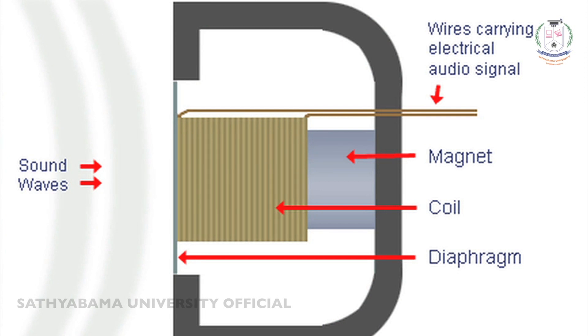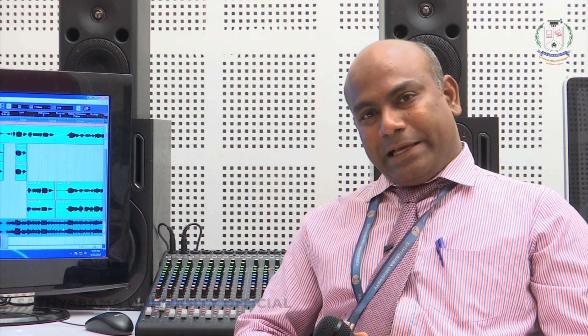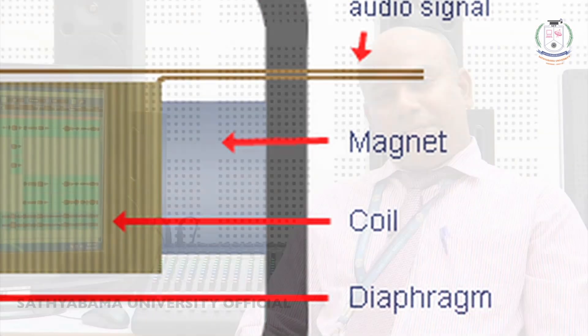Due to that, there is an electromotive force created — it means electromagnetic induction happened. So this process gives the electrical signal. That is the function of the dynamic microphone.